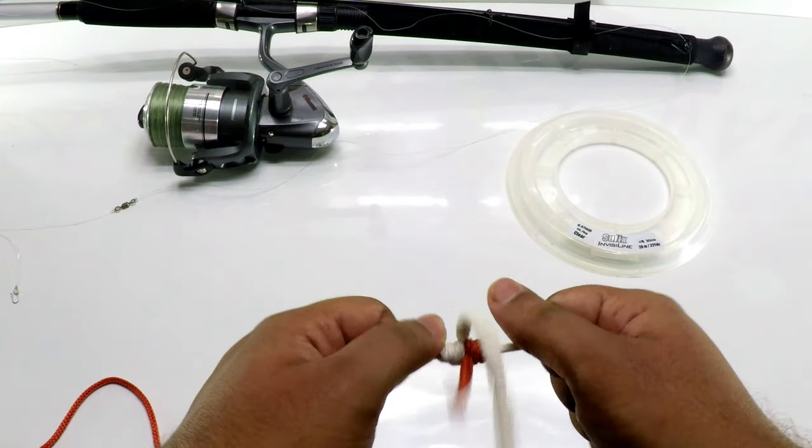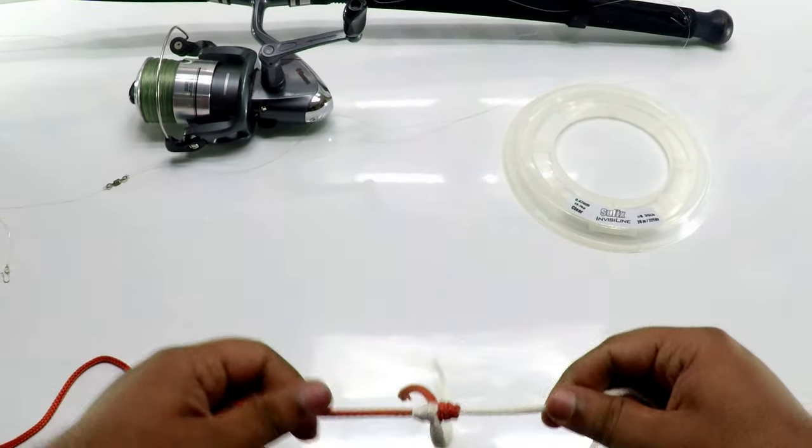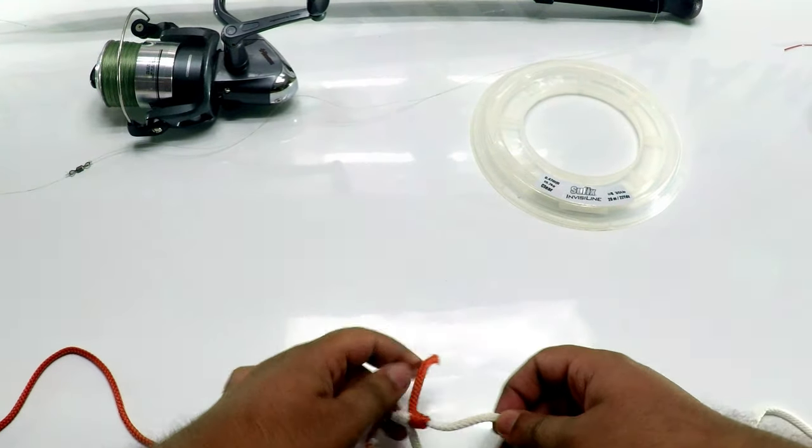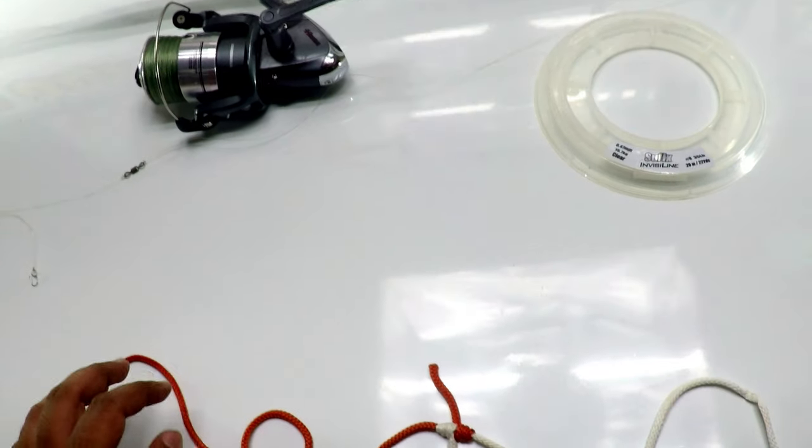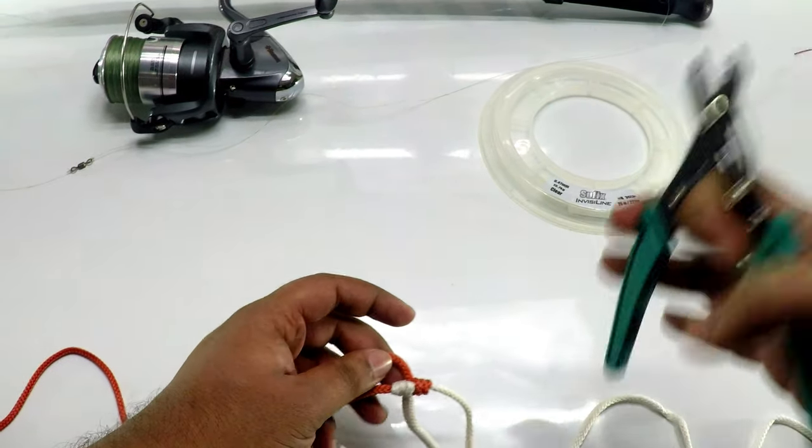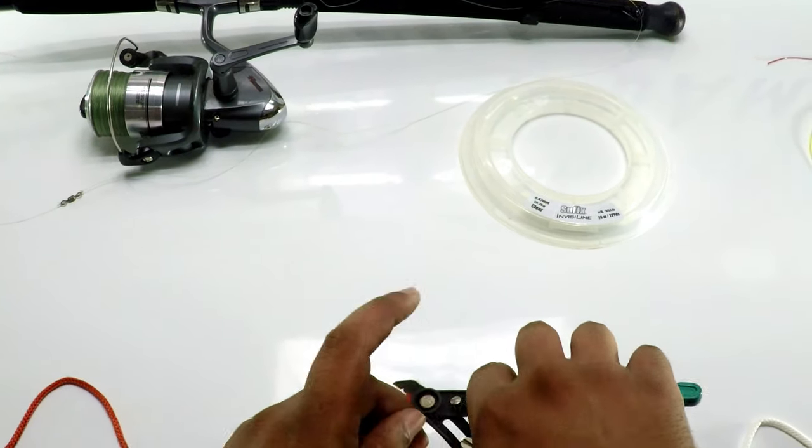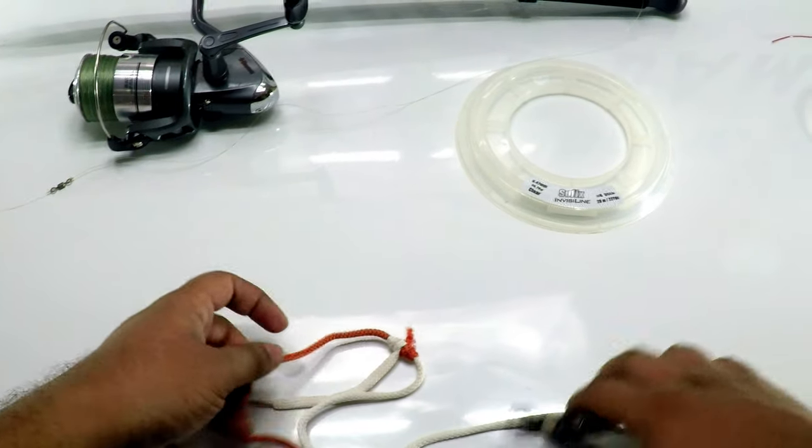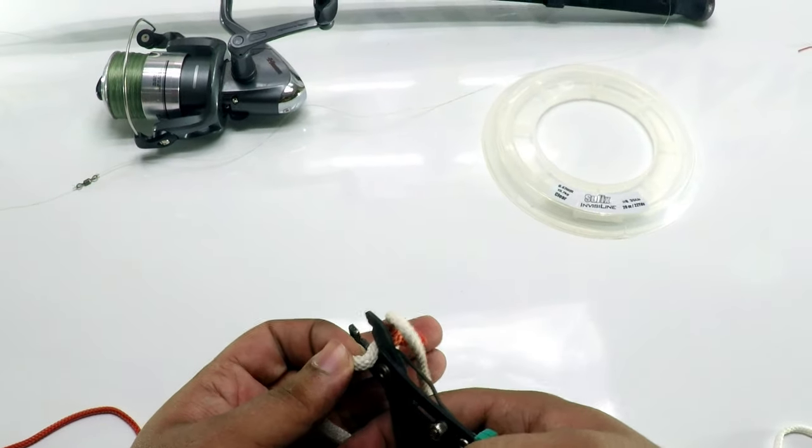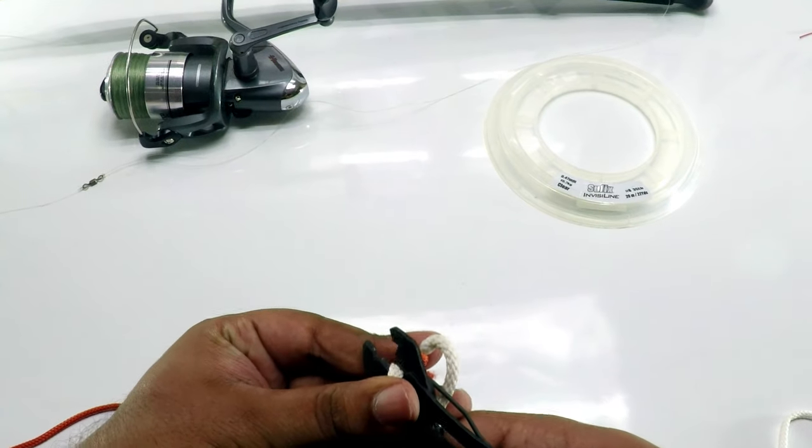This is the easiest and cheapest way to connect two lines, and it's pretty strong. Blood knots have their reputation—they're used by most anglers and they keep the knot very thin.